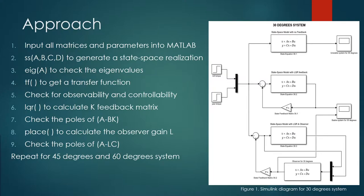Before we go to MATLAB, we will briefly go over the flow of our code. First, we input all the matrices and parameters into MATLAB. Then we generate a state-space realization using SS, passing the arguments ABCD. Then we check the eigenvalues of the open-loop system and get the transfer function using TF. MATLAB has built-in functions to check for observability and controllability. To calculate the feedback matrix, MATLAB uses LQR — we pass arguments A, B, Q, and R. Then we check the poles of the feedback, A minus BK, to make sure they are in the stable region.